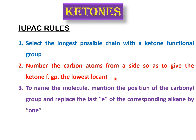To name the molecule, you have to mention the position of this carbonyl functional group and replace the last 'e' of the corresponding alkane by '-one'. Alkane names end with 'e', so you remove this 'e' and replace it with '-one', forming an alkanone. Let's see an example: we have a carbon chain with five carbon atoms and a carbonyl functional group.